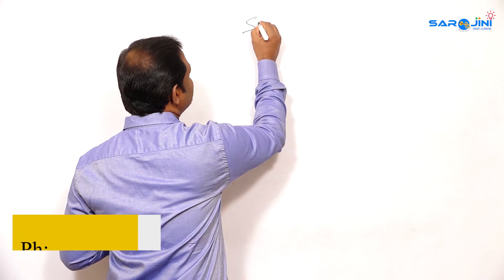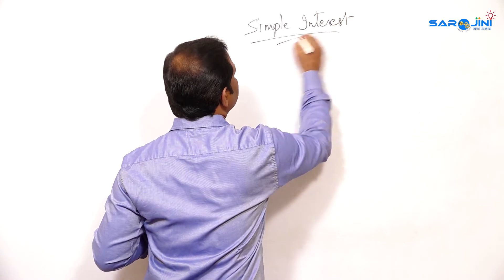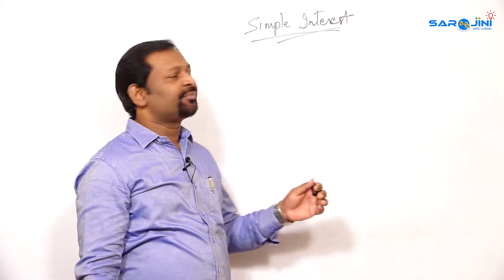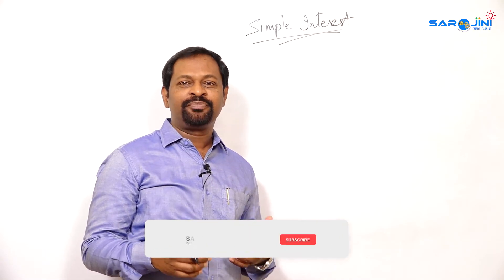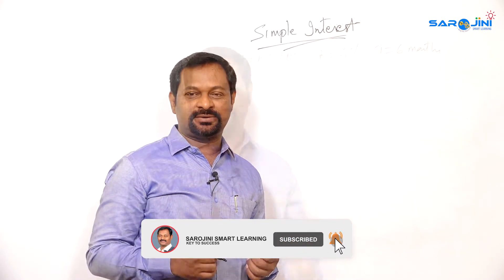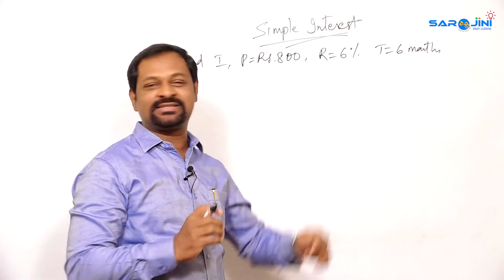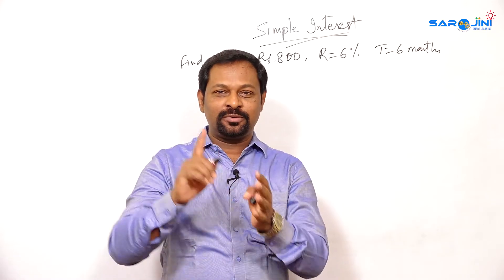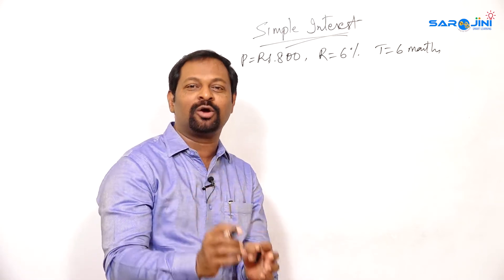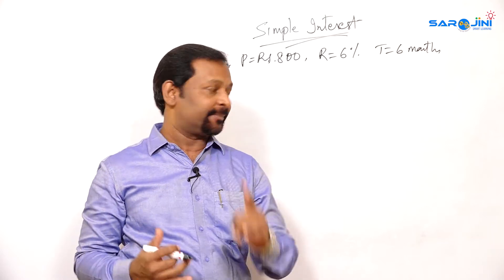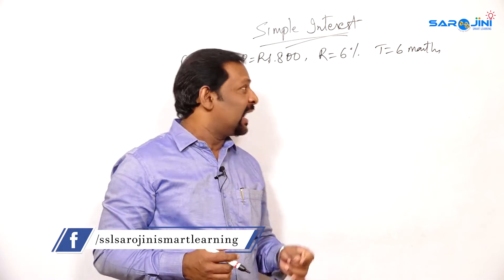In the last episode we discussed about what is simple interest and the story of simple interest. So in this episode we are going to learn in detail about how to do the calculations in sums. Now I will write a question and explain how to do it. You are going to find out the simple interest of a given sum, but there is a difference from the previous one. The principal amount is given as 800 rupees — that means you have borrowed 800 rupees. The rate of interest is 6%.